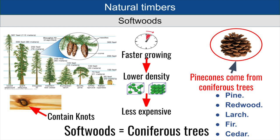To identify softwood trees, you'll notice that they have pine cones and are coniferous trees — so softwoods come from coniferous trees. Examples include pine, redwood, larch, fir and cedar. The downside to softwoods is that they're not always as strong and they don't resist rot very well, so they're typically not used in outdoor settings — certainly not without being treated.